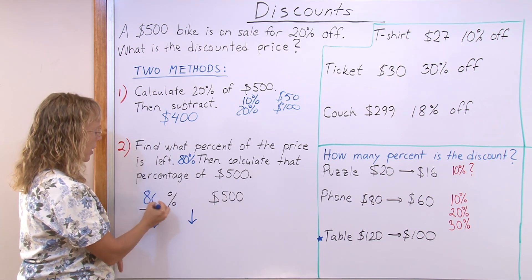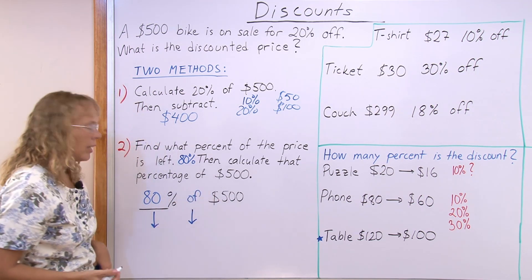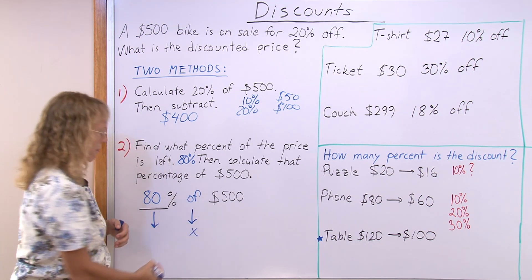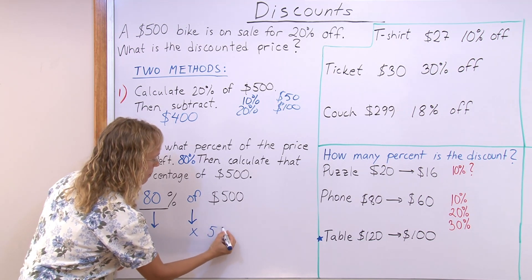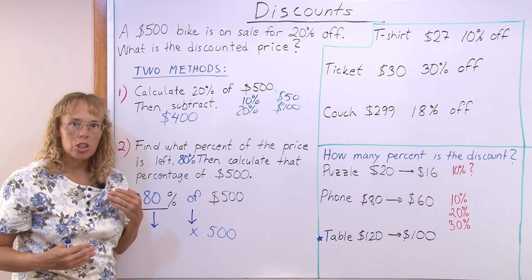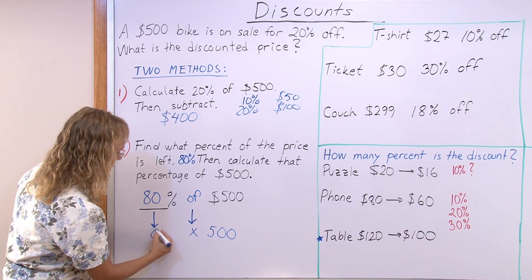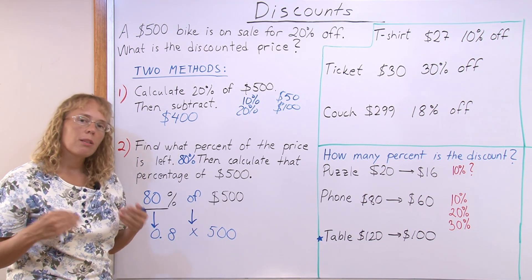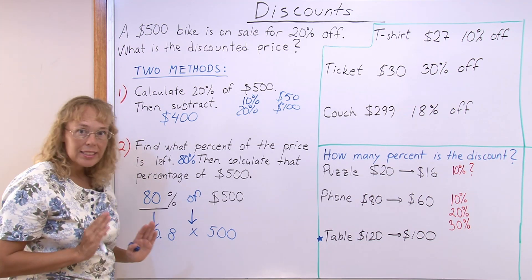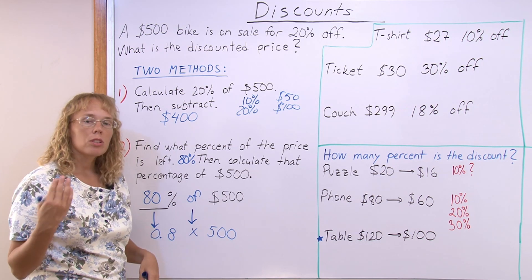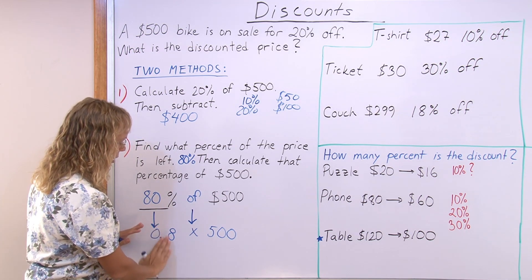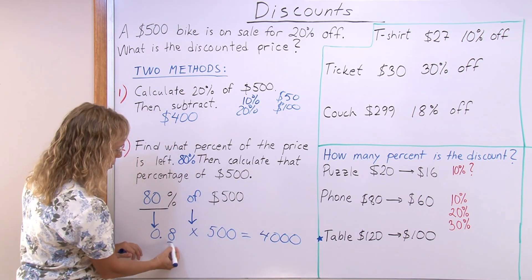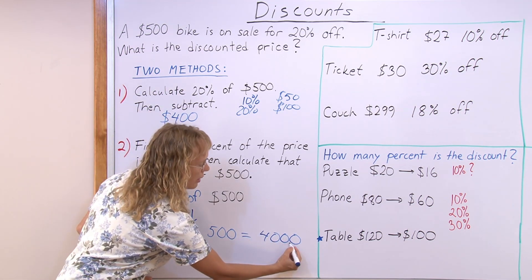Then we calculate 80% of $500. To calculate 80% of $500, remember that "of" translates into multiplication. 80% we change into a decimal: as a decimal, it is 0.8. You could multiply this using a calculator or just use mental math. In mental math, since it is a decimal, we first multiply as if there was no decimal point — 8 times 500, which is 4000. But since there is one decimal digit in 0.8, we have to have one decimal digit in the answer too.